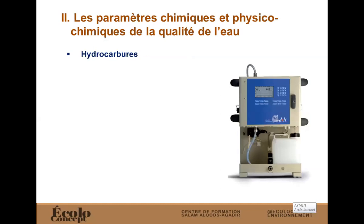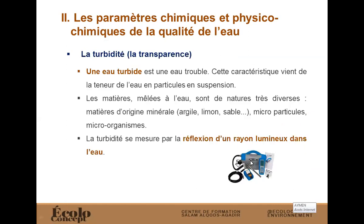L'unité est le NTU - unité néphélométrique. Lorsqu'on mesure la turbidité à travers un turbidimètre, l'unité c'est le NTU. Normalement, le laboratoire vous fait les mesures en termes de concentration, on fait la traduction du résultat sous forme d'une concentration, il y a des équations à suivre. Selon cette concentration, vous aurez une idée sur la quantité des matières en suspension contenues dans les rejets de votre activité. Vous comparez toujours avec les paramètres définis par la législation.